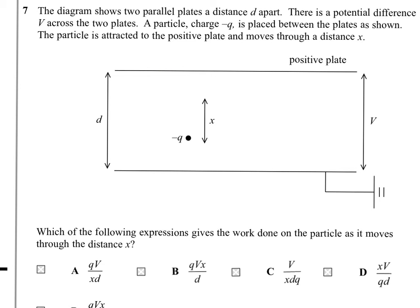Question 7. The diagram shows two parallel plates of distance D apart. There's a potential difference V across the two plates. A particle of charge minus Q is placed between the plates as shown. The particle is attracted to the positive plate and moves through a distance X. Which of the following expressions gives the work done on the particle as it moves?